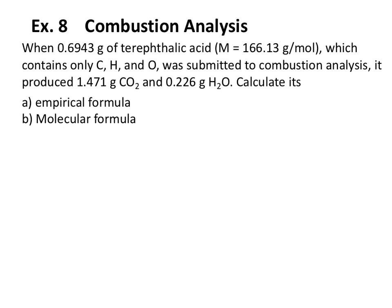We're told that this compound only contains carbon, hydrogen, and oxygen, so its empirical formula is going to take the form CₓHᵧOᵤ. What's going to happen is this compound will be burned in the presence of oxygen, producing carbon dioxide and water. All of the carbon in the original compound will become CO₂, all of the hydrogen will become water, and the oxygen present both in the compound and in the burning gas becomes part of both products. The total mass submitted for combustion analysis is 0.6943 grams.